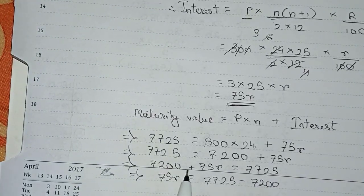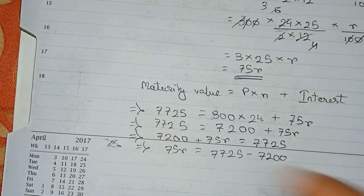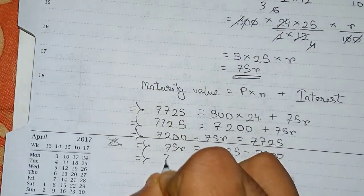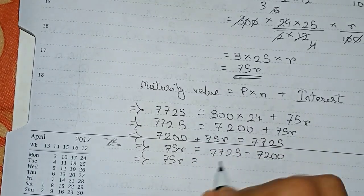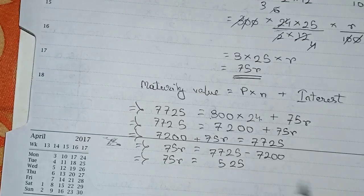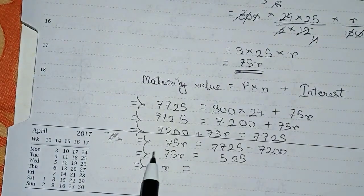So 7200 as it is in addition this side, so it goes for subtraction in this side. So 75r is equal to 7725 minus 7200, so 525.